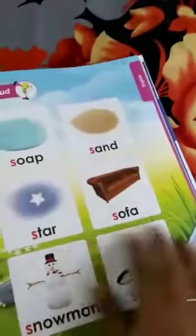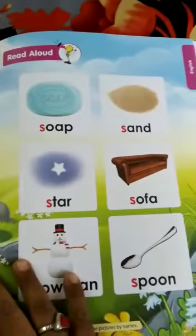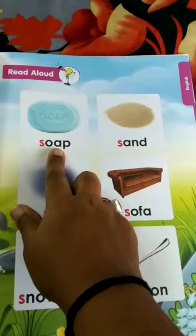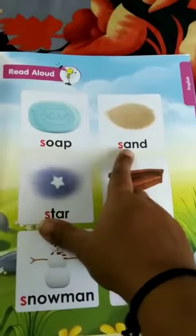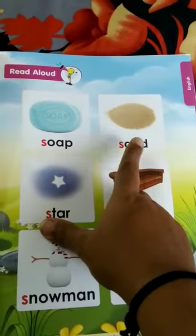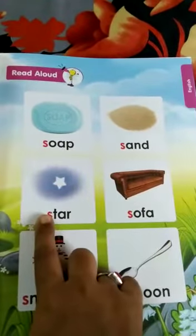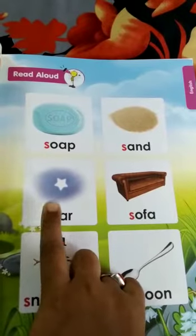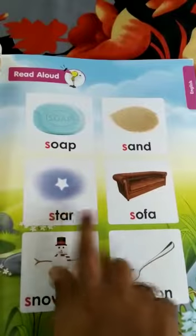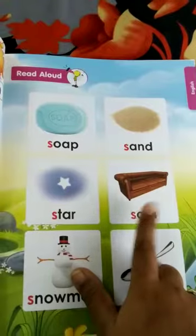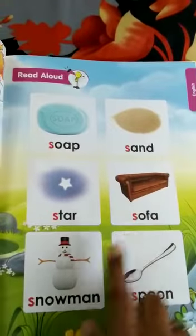Now revise one more picture with the sound. S for soap — S, S, soap. S for sand — S, S, sand. S for star — S, S, star. S for sofa — S, S, sofa.